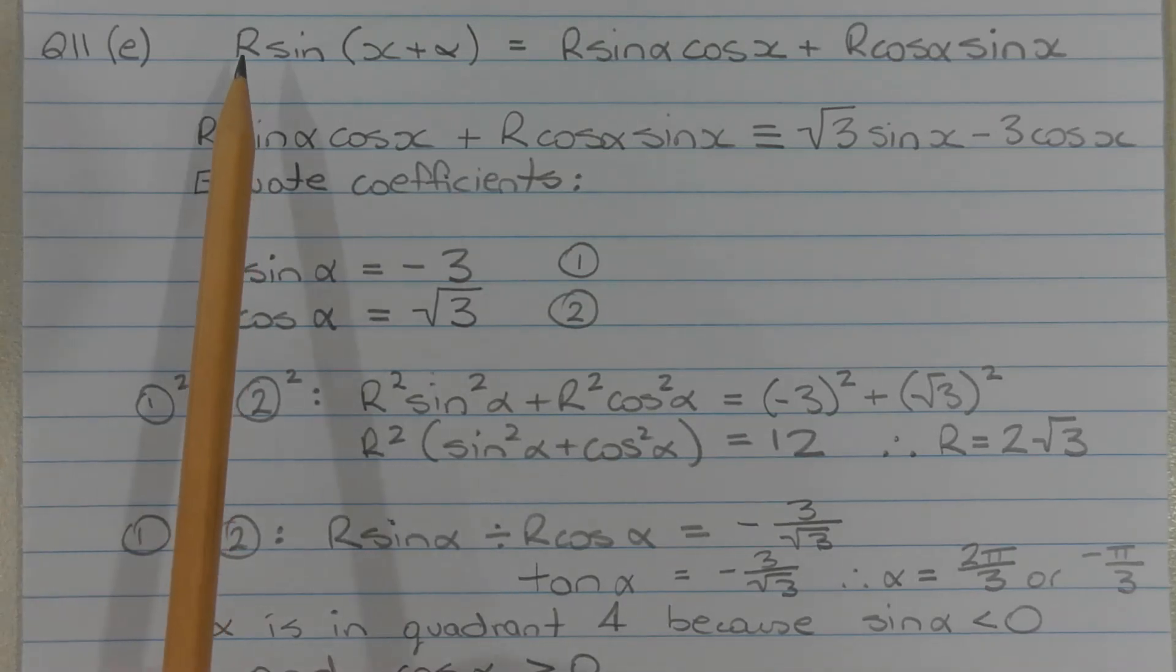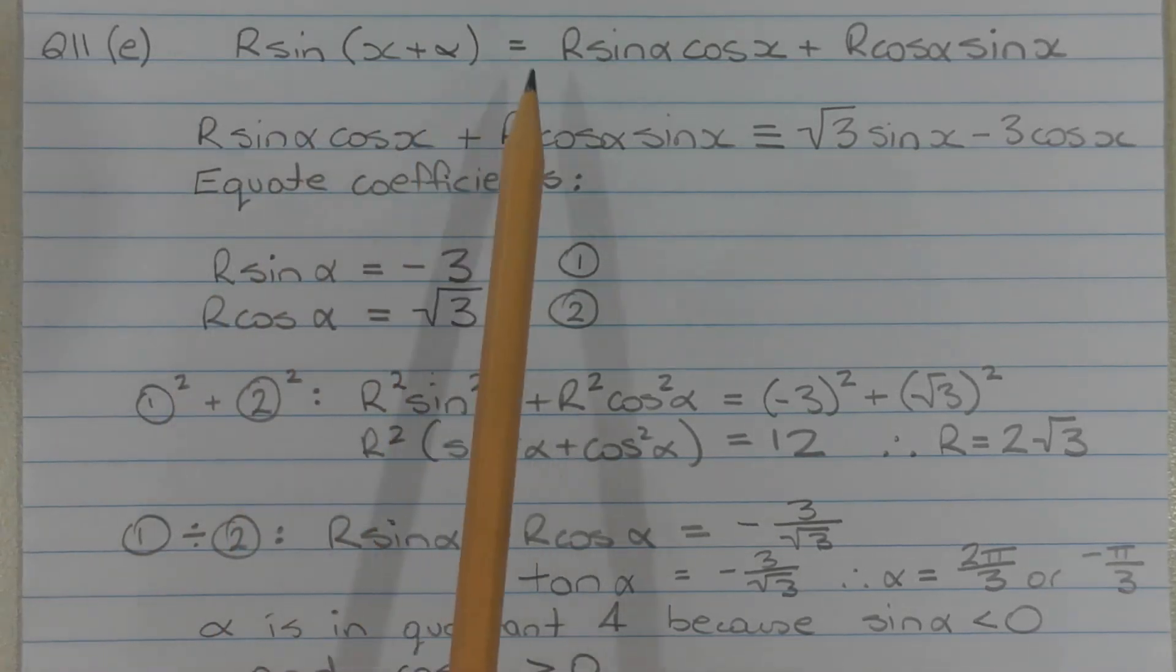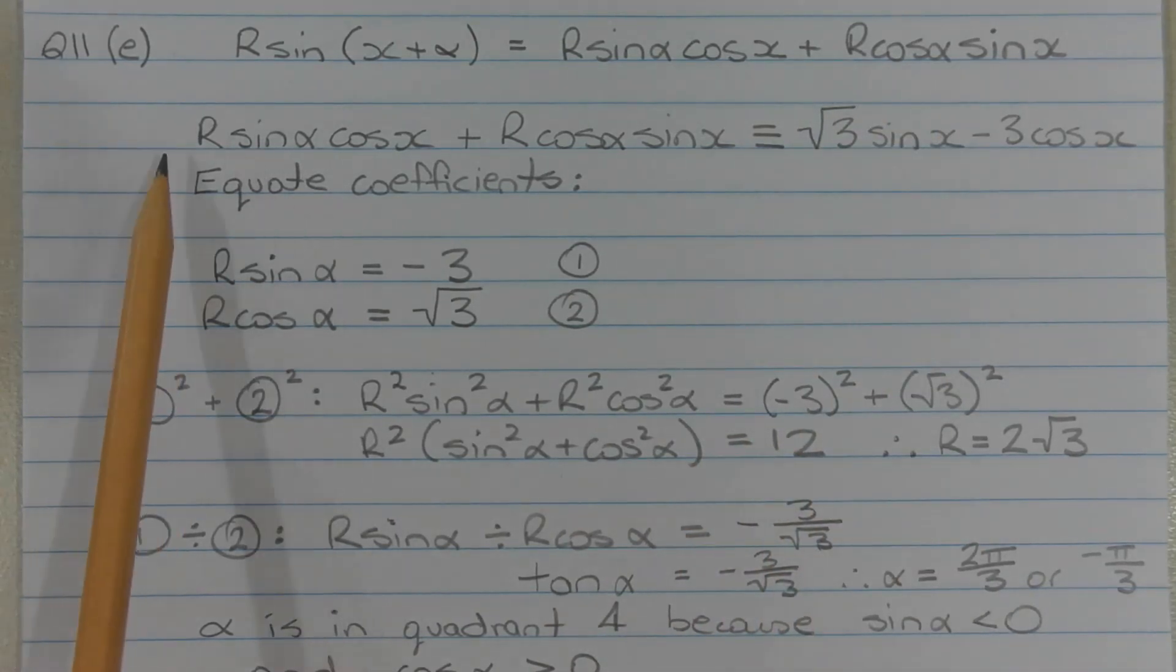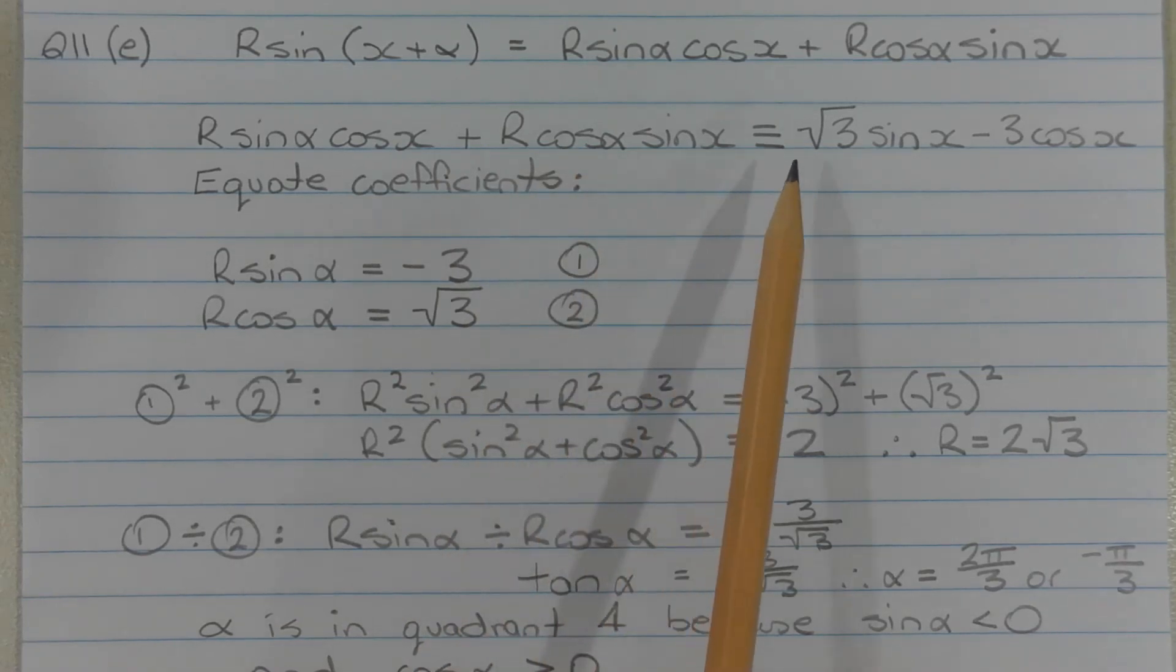The compound angle function r sine x plus alpha expands to r sine alpha cos x plus r cos alpha sine x. Now r sine alpha cos x plus r cos alpha sine x is identical to the square root of 3 sine x minus 3 cos x.